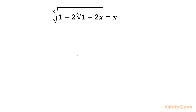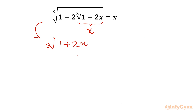If you notice this cube root term, it is repeating itself — cube root of 1 plus 2 times, again, cube root of 1 plus 2x. So we will replace this inner cube root by writing x over there. This converts the equation to: cube root of 1 plus 2x equal to x.